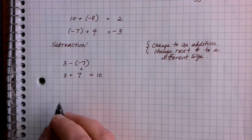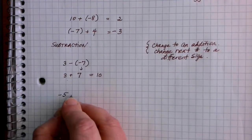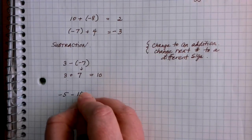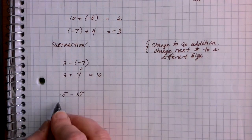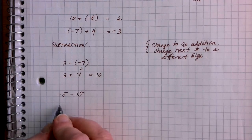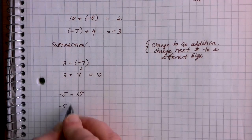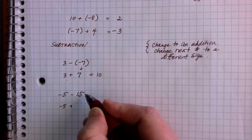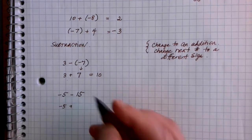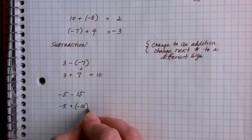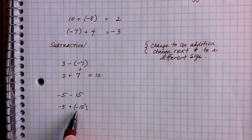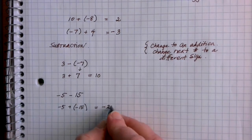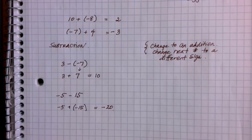Let's try negative 5 minus 15. Never subtract again — change the subtraction to an addition, then change the sign of the number that comes after. It was a positive 15, so it becomes negative 15. Now it's an addition problem: the signs are the same. We have 5 on the negative side and another 15 on the negative side, for a total of 20 on the negative side. Our solution is negative 20.